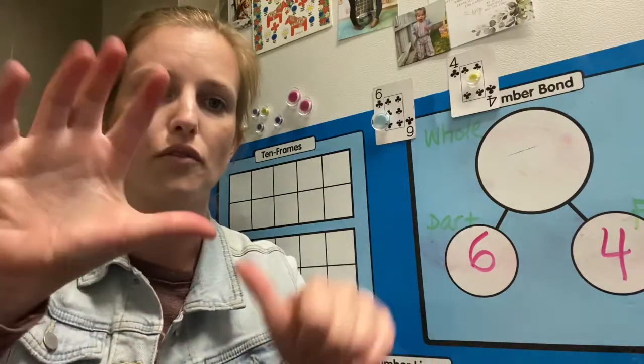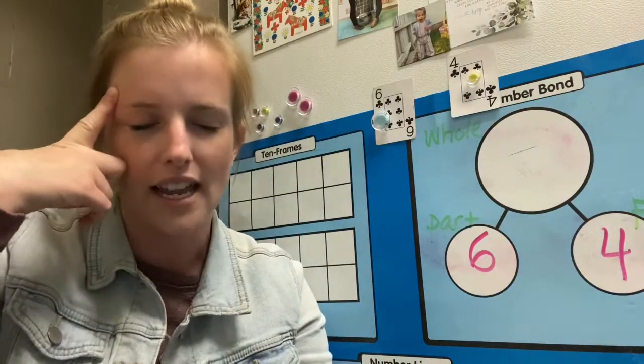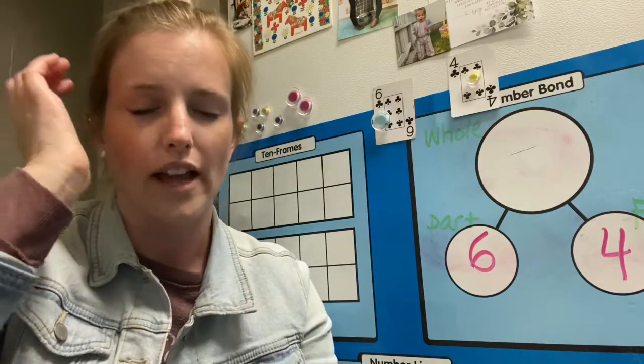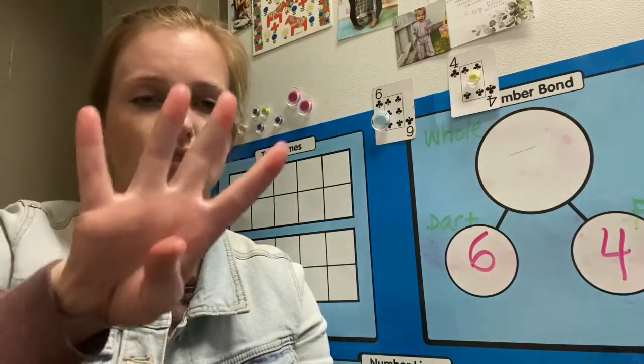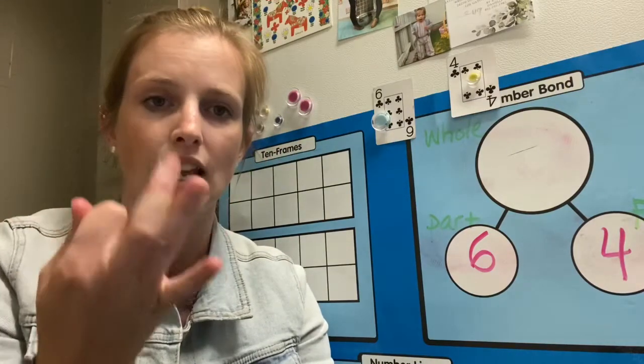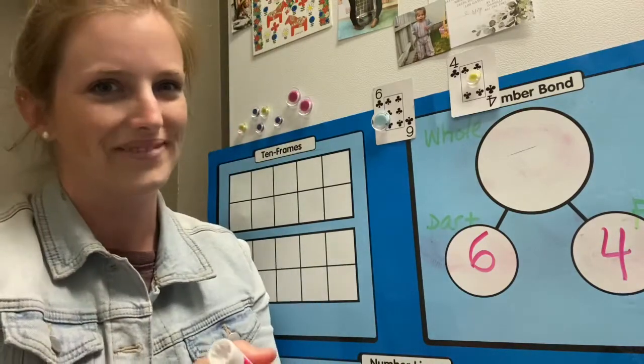So I'm not counting one, two, three, four, five, six, and then adding four more. What I'm doing is I'm putting the six inside of my brain and I'm starting counting up from there. So I have six in my head and now I'm going to count on four. So I say seven, eight, nine, ten. And I landed on ten.